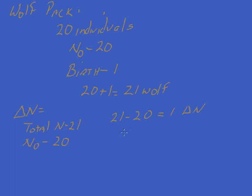Now, the growth rate is the change in N, the change in N over N-naught. So in this case, our change in N is 1, and our N-naught is 20.